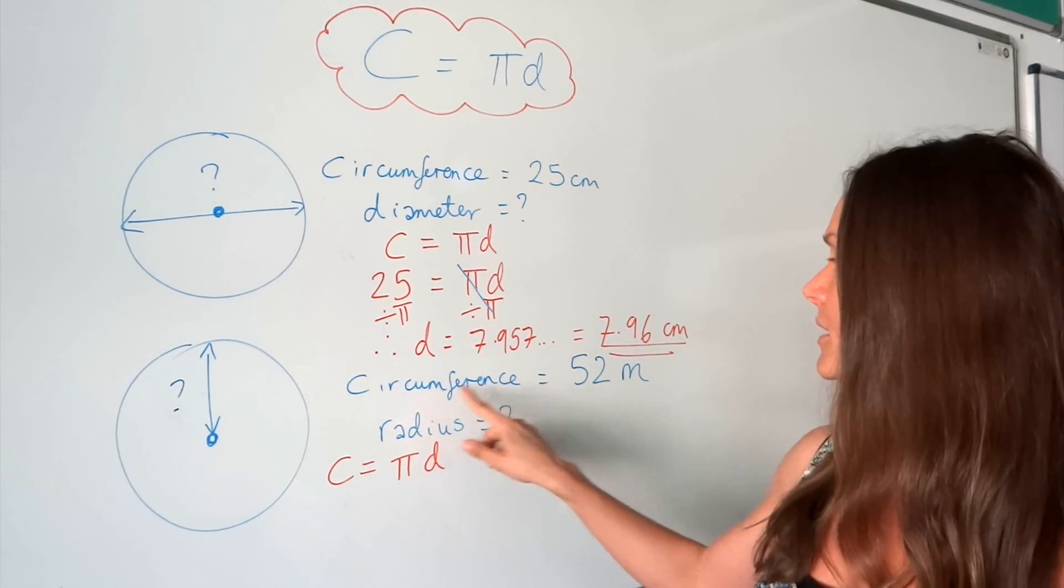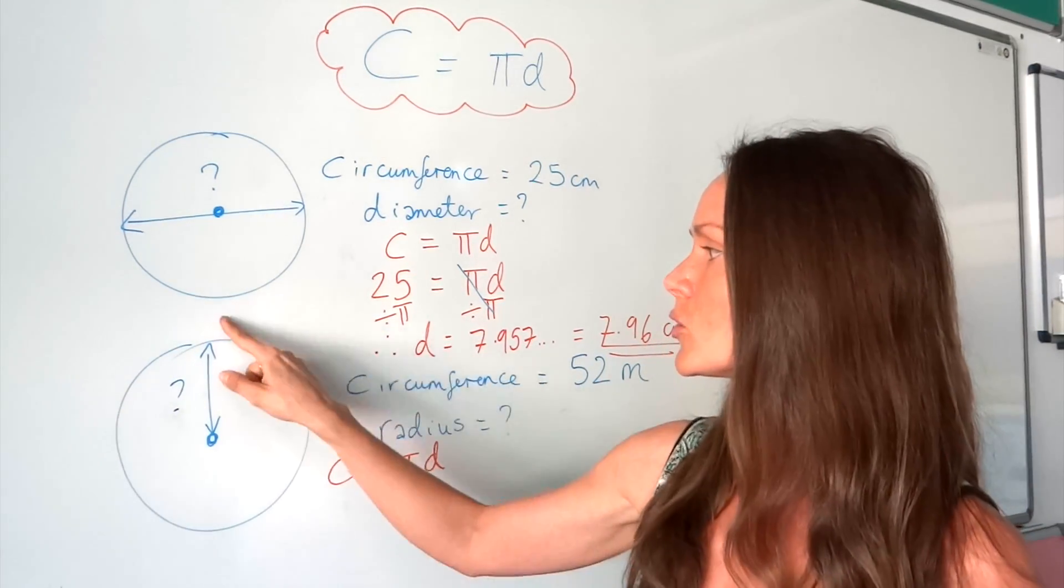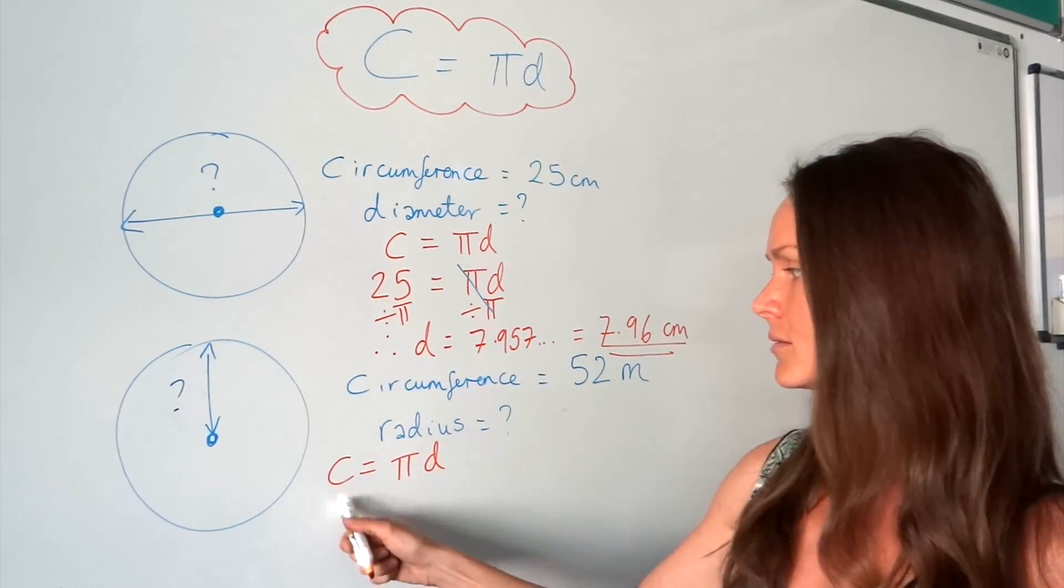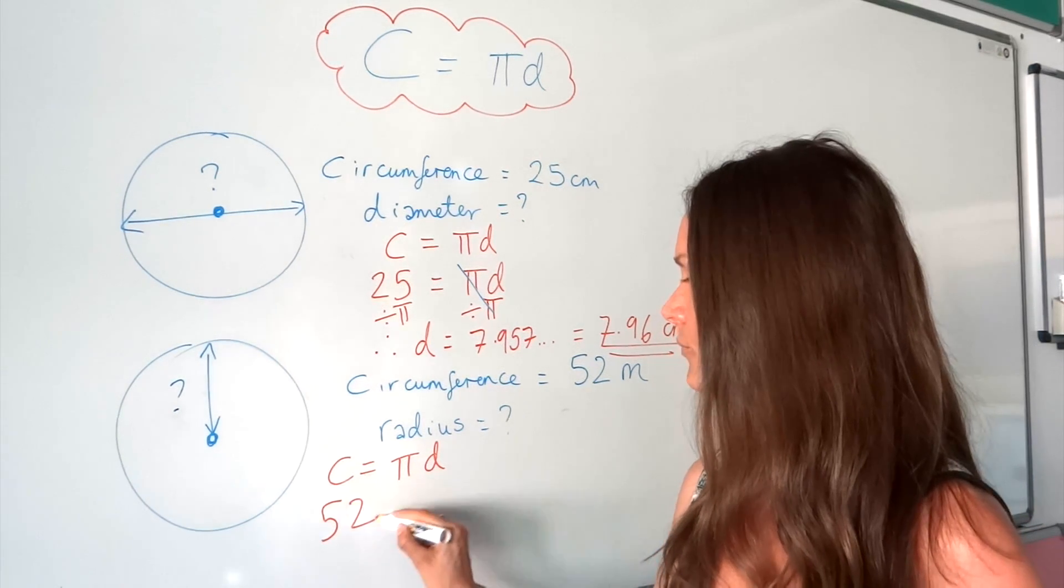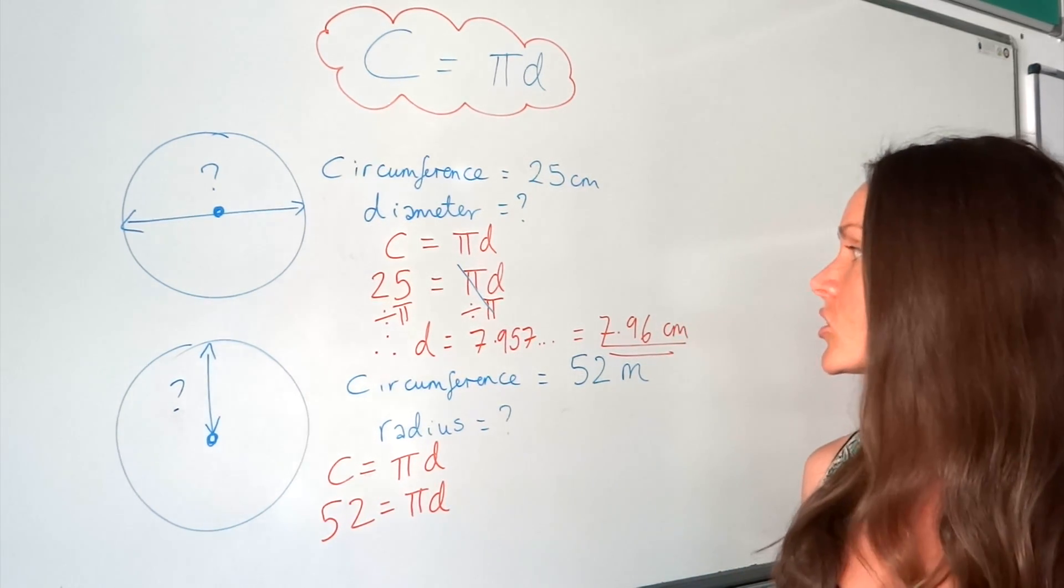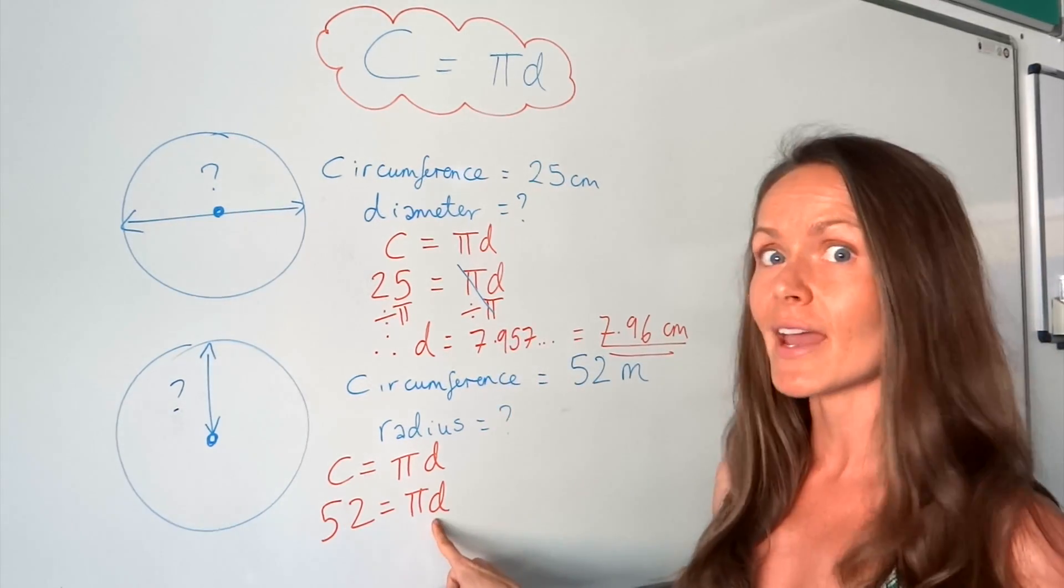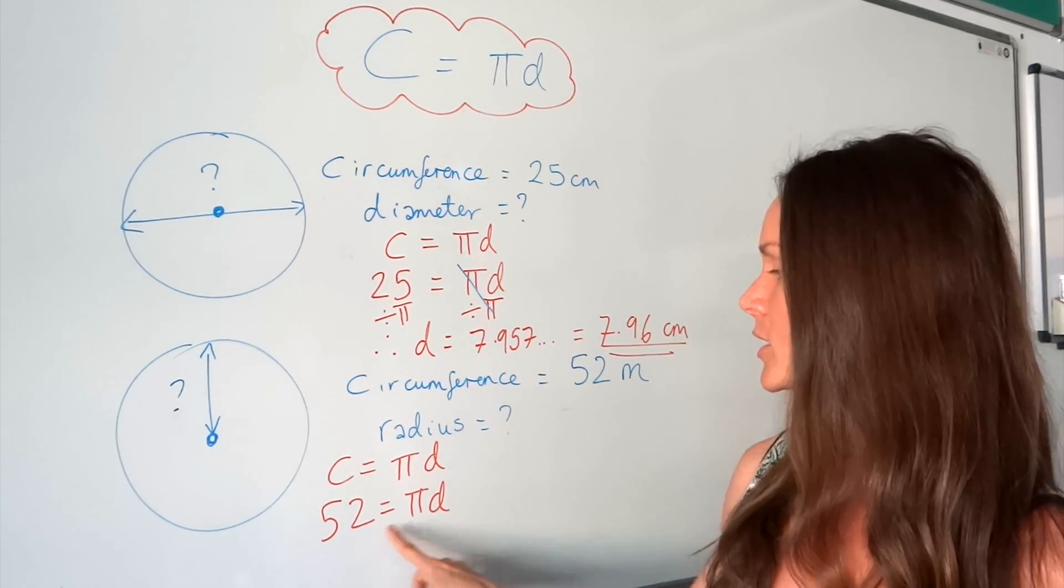The next step is to substitute in what you know. We are given the circumference is 52 meters. This distance is 52. So I'm going to change C to 52, and that leaves me with π d. Just like in the example up here, to find the value of d, the diameter, we need to divide by π.